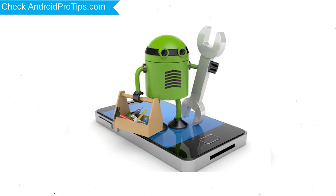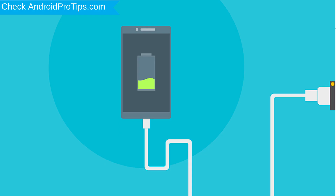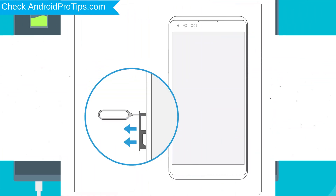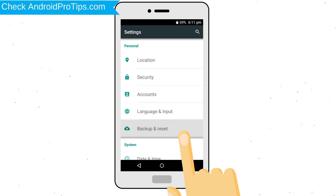Before resetting your mobile, your mobile battery must be above 50%. Remove SD cards and SIMs. Back up your Android mobile data if possible.